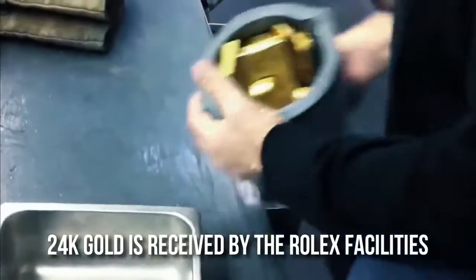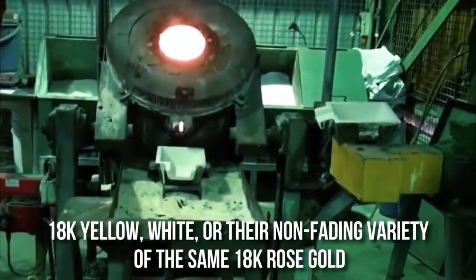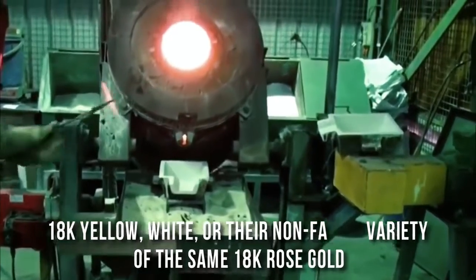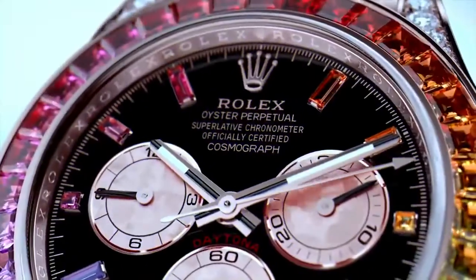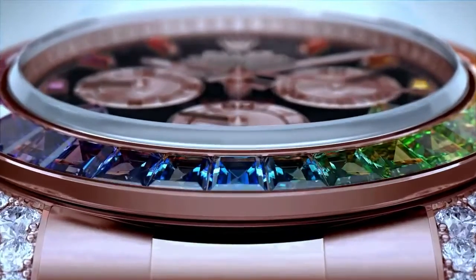Once the 24k gold is received by the Rolex facilities, they have the appropriate equipment and machinery to transform it into 18k yellow, white or the non-fading variety of the same 18k rose gold, commonly known as Rolex's Everose gold. As far as we can tell, it is the only watchmaker that has the facility as well as their own real foundry to make gold.